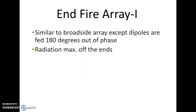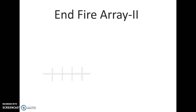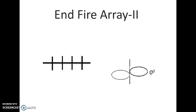The end-fire array has all criteria similar to the broadside array except that the dipoles are fed 180 degrees out of phase. In the broadside array all dipoles are fed with the same phase, but in the end-fire array the phase provided to each signal is 180 degrees out of phase. The radiation maximum is along the ends of the axis — that is why it is called an end-fire array. In the configuration, if the axis is along 0 and 180 degrees, the maximum lobes are along 0 and 180 degrees.